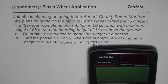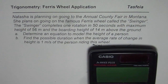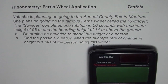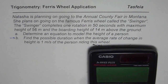I am Anil Kumar sharing with you an excellent question from my student Tasphia. Now we have two parts to this question. In part 1, we developed an equation to model the situation. The question is: Natasha is planning on going to the annual county fair in Montana. She plans on going on the famous Ferris wheel called the Swinger, which completes one rotation in 50 seconds. To find the average rate of change, we do need the equation of the function itself, which we developed in part 1.